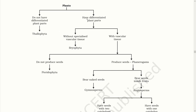Bryophytes have a differentiated body into stem and leaf-like structures but no roots. These are also called Amphibians as they are found in both environments — water and land. In Pteridophyta, we can find all body structures well-defined as stem, leaves and roots, meaning they have vascular tissue. Seeds are produced by sexual reproduction through flowers in plants. Thallophyta, Bryophyta and Pteridophyta, whose reproduction is not certain, are called Cryptogames. Those Pteridophyta which produce seeds are further classified into Gymnosperms and Angiosperms.